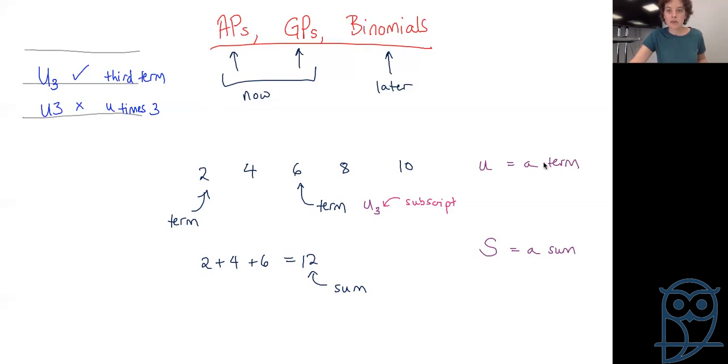Subscripts are important. u is a term, u1 would be our first term, but that is a little bit clunky. We're going to use that first term a lot, so we're not actually going to use u1 - we're going to use a for that first term. The fifth term we can write u5 equals 10. We now have a way to shrink our English to get much shorter pieces of writing.